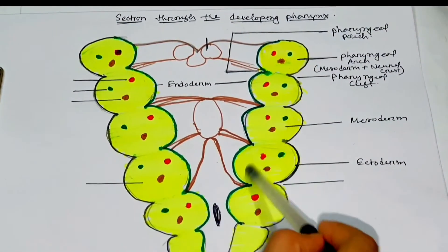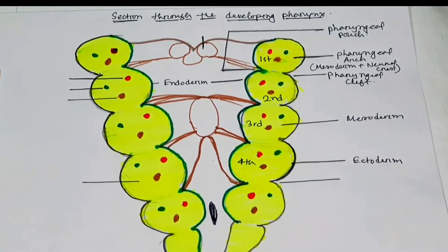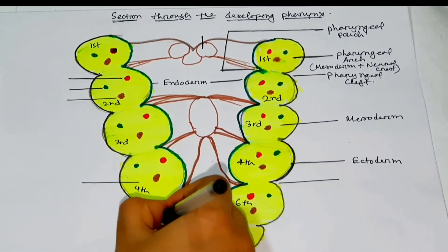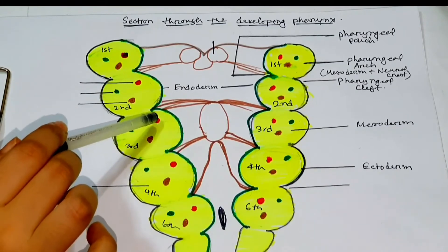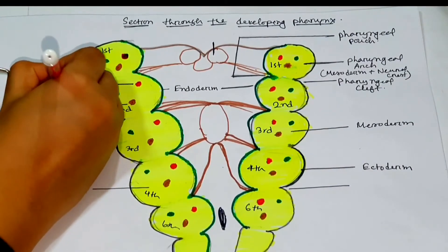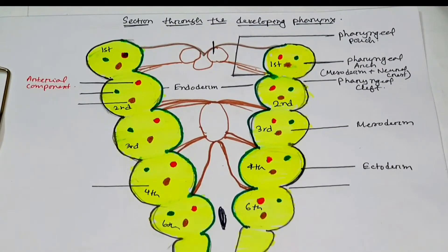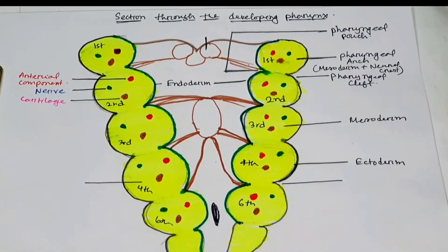Numbering the arches: the first arch, second, third, fourth, and sixth. You may ask where the fifth arch is — the fifth arch usually disappears. Each pharyngeal arch has three components: an arterial component, which usually derives from the aortic arches; a nerve component; and a cartilaginous component.